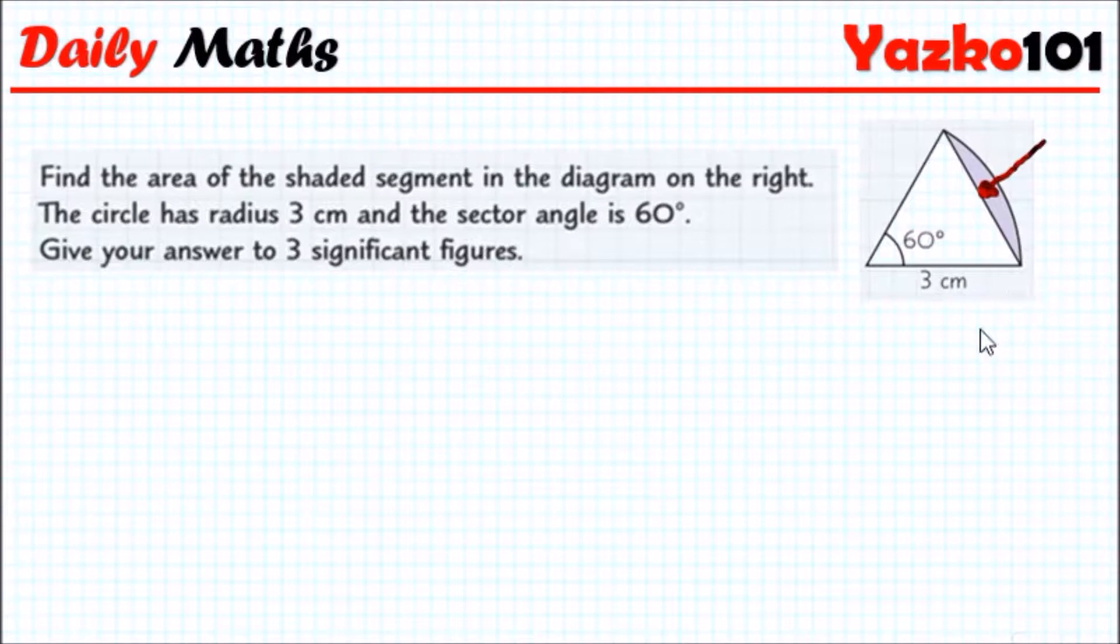The circle has a radius of 3 centimeters. Since it's a sector of a circle, we know that this side also has 3 centimeters, and the angle itself is 60 degrees. Give your answer to three significant figures. First things first, let's try to understand some properties here.